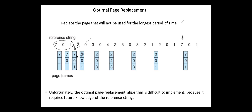Zero is there. Now page 3 is not here, and among the pages 0, 1, and 2, page 1 is selected as a victim since it's the page that will not be used for the longest period of time. So 3 is brought here, and we continue in the same manner. According to this algorithm, the number of page faults equals 9.